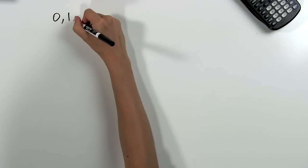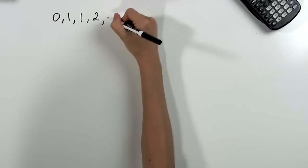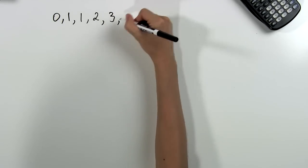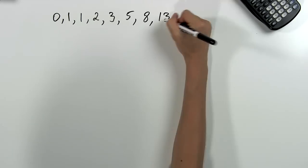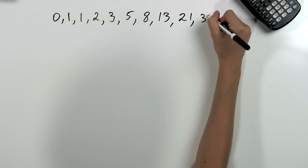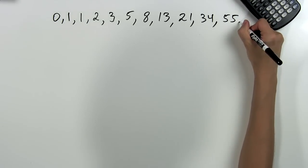So we have 0 plus 1 is 1, 1 plus 1 is 2, 1 plus 2 is 3, 2 plus 3 is 5, and then we have 8, 13, 21, 34, and 55. And so the list continues.